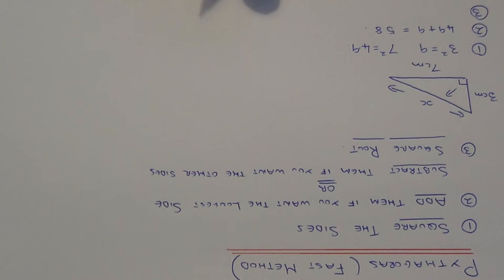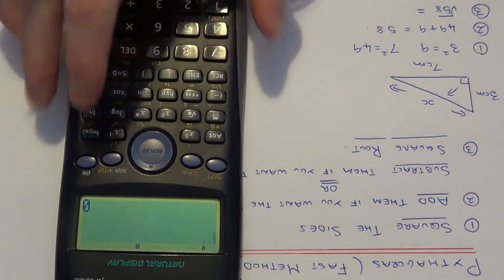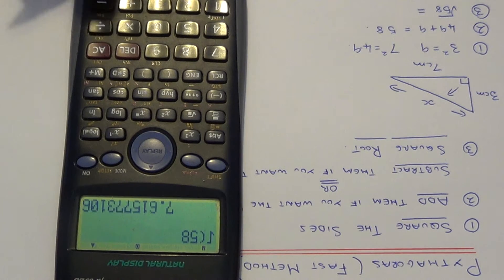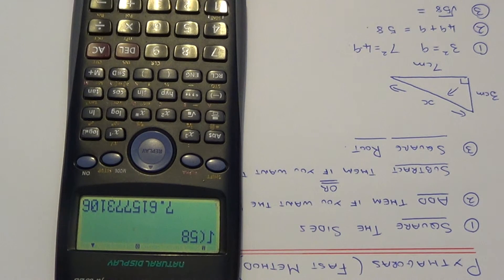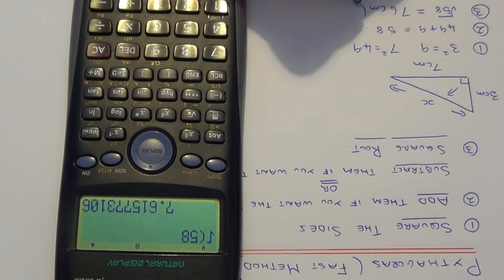And then your final step, step three. All we need to do now is square root the answer from step two. So if you get your calculator and square root of fifty-eight gives seven point six centimeters to one decimal place.